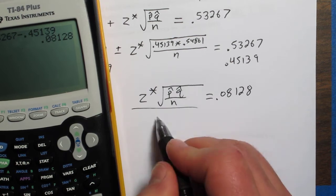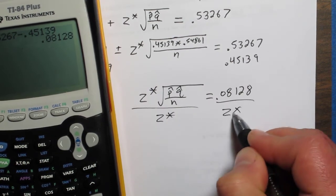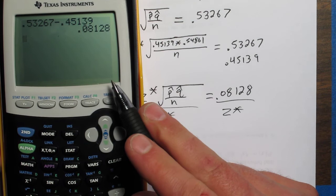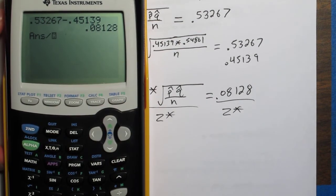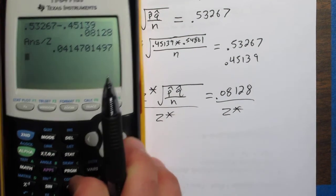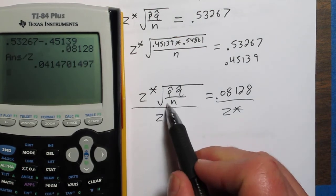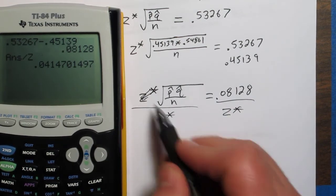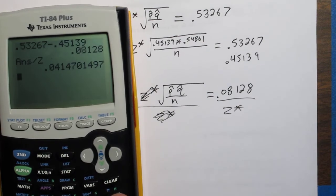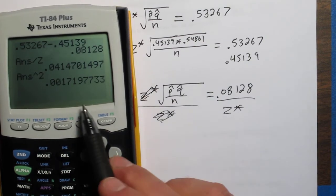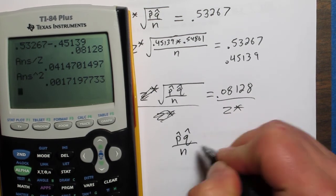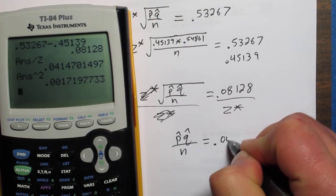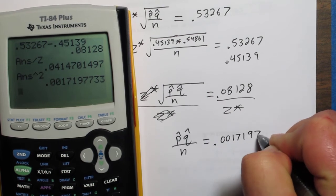Now the next thing we'd want to do is divide both sides by z star. And remember, z is saved on my calculator. So z star is saved on the calculator. So I'm going to say, divide this by z. Okay, now we have that value. The next step, because we have this square root sign here, we need to square both sides. So I'm going to square this, and we have that value. So let's see where we're at now. p-hat q-hat over n equals 0.0017197733.